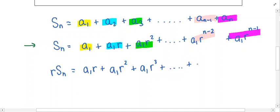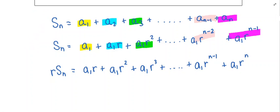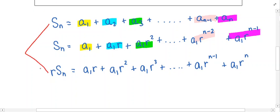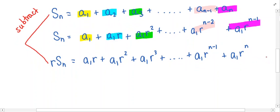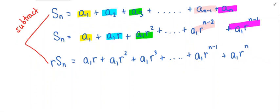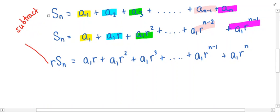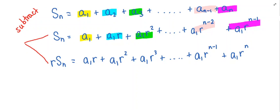Getting down to the last terms, the pink term becomes A1 times R to the n minus 1, and the purple last term becomes A1 times R to the nth power. Now that we have both lines, we are going to do another trick: we are going to subtract these two lines from each other.